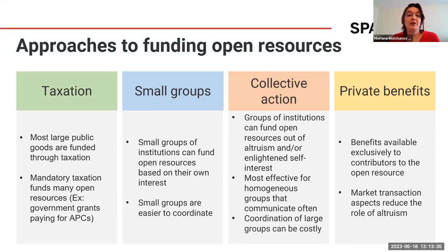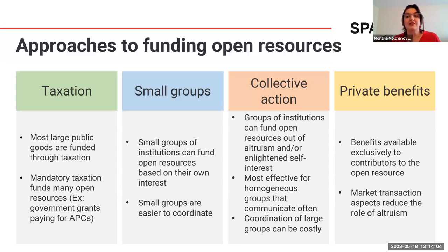The bigger the group, the more expensive to coordinate. Finally, we have private benefits, where institutions that contribute to creating the open resource receive exclusive benefits only available to them. This adds a market transaction component — there is a trade happening — and that reduces the need for altruism. Private benefits can be expensive to provide as well.